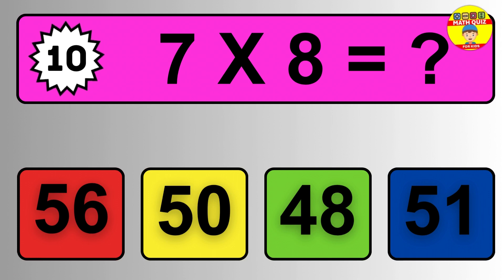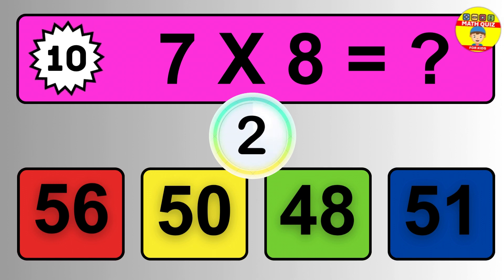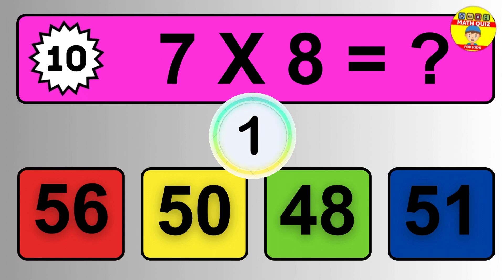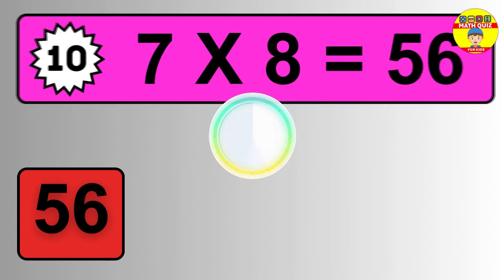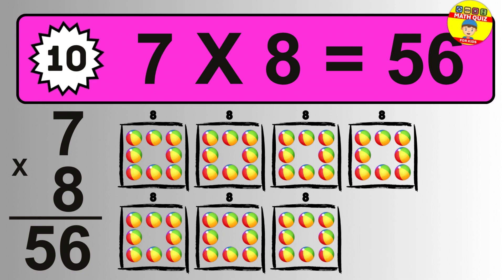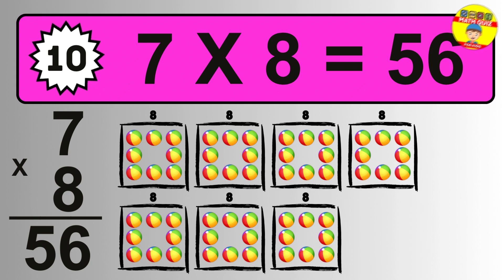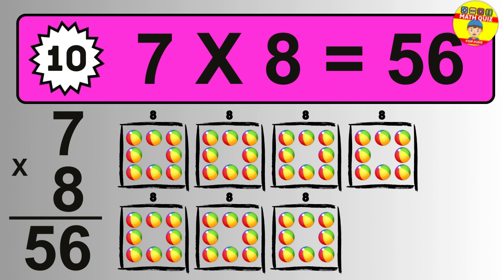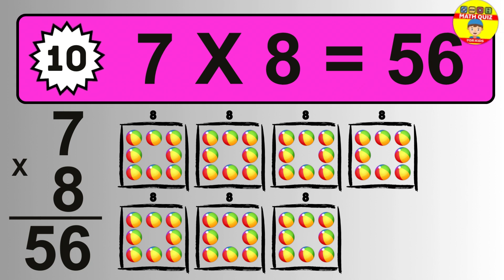Question ten: seven times eight equals what? The answer is seven times eight is fifty-six. To calculate, we have seven groups with eight balls each. So how many balls do we have? Fifty-six balls.